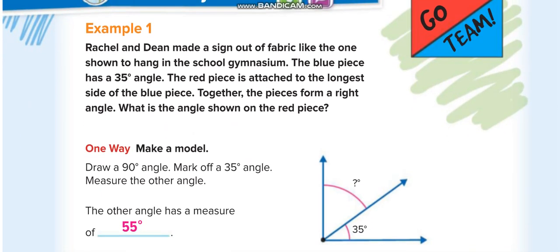You guys already know how to measure angles. In this lesson we will have some examples to find out an unknown angle. They give you an example here: Rachel and Dean made a sign out of fabric like the one shown to hang in the school. If this angle is 35, you know the straight line—if it is a straight line you can measure it with the D-shape protractor.